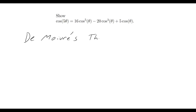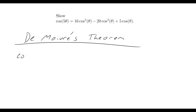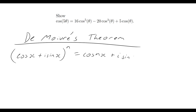I'm certainly butchering that name — I am terrible with my French — but de Moivre's theorem states that cos(x) plus i·sin(x), when raised to some integer power n, is always going to be equal to cos(nx) plus i·sin(nx).